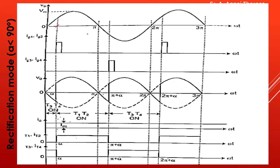Due to the inductance effect, the output current will be continuous — there is a continuous flow of current. Then at pi plus alpha, we trigger the thyristors T3 and T4. They will conduct and the output follows accordingly.